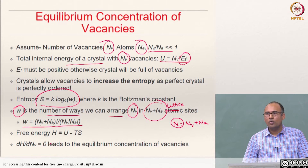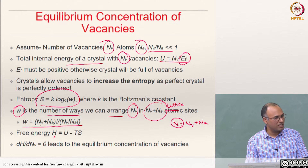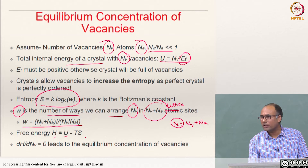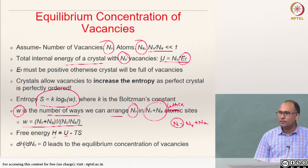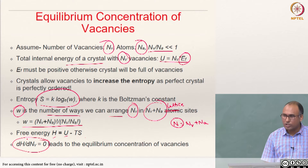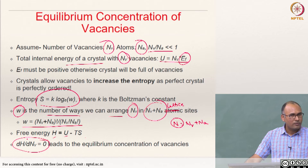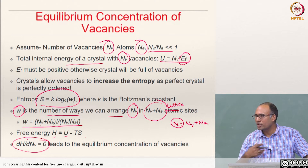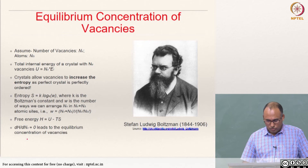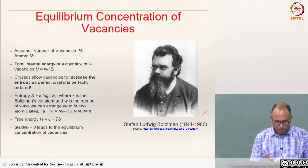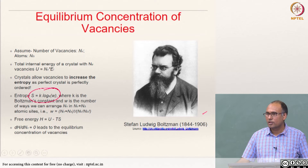We know how to define the Helmholtz free energy: F = U − T·S, where U is internal energy, T is absolute temperature, and S is entropy. To find equilibrium in the presence of vacancies, we need to find the stationary value of F — that is, dF/dNv = 0. This is the condition we employ to find the equilibrium vacancy concentration.